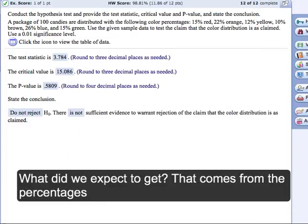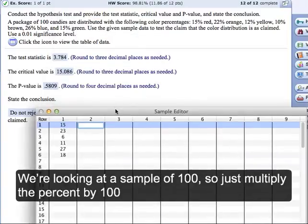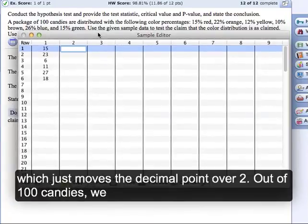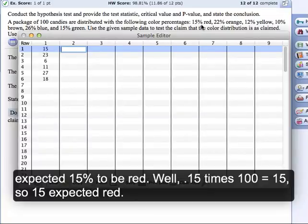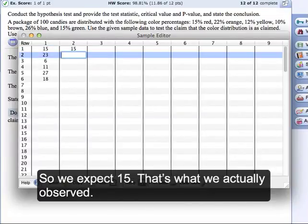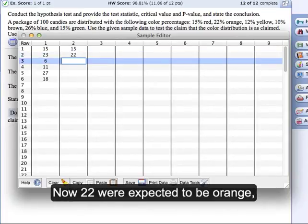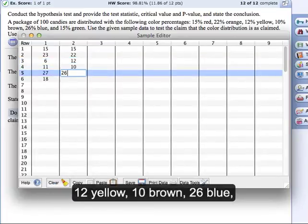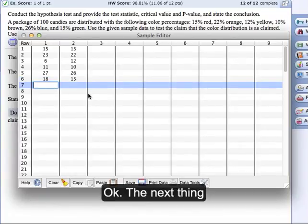Now what did we expect to get? That comes from the percentages. We're looking at a sample of 100, so you just multiply the percentage by 100, and it just moves the decimal point over two. So out of 100 candies, we expect 15% to be red. Well, 0.15 times 100 is 15, so we expect 15. And in fact, that's what we actually observed in column one. Now 22 we're expected to be orange, 12 yellow, 10 brown, 26 blue, and 15 green. So that's what we've got there so far.